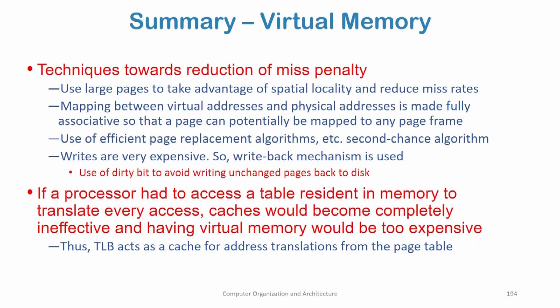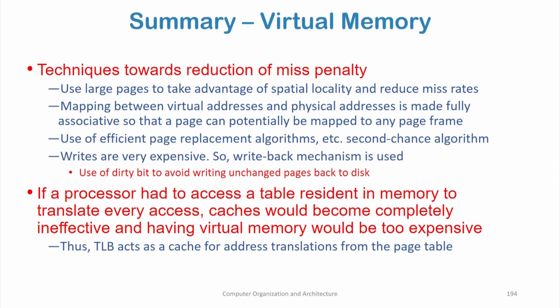If a processor had to access a page table resident in memory to translate every access, caches would become completely ineffective, because every access would require a memory access to the page table. The TLB acts as a cache for address translation from the page table. Frequently accessed page table entries are put in a TLB, so that on every access we do not have to go to main memory, which heavily improves performance.